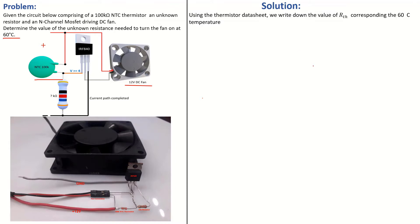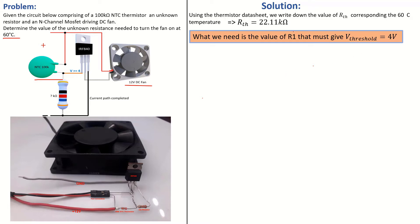Now that we know that information, we can write it down: RTH equals 22.11 kilo-ohms at 60 degrees. We can call the unknown gate-source resistor R1. We need a value of R1 that will set up a voltage divider with this 22.1 kilo-ohm thermistor to give us a threshold voltage of 4 volts, so that the DC fan can start turning.